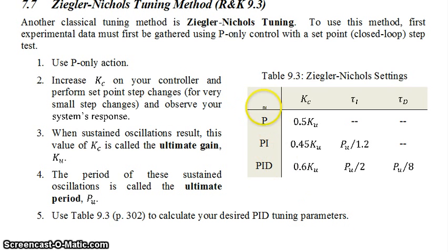For proportional only control, this method recommends that you use a controller gain as one half of your ultimate gain. If you have PI control, it recommends that you use your proportional gain as 45% of your ultimate gain, and then your tau i is going to be your ultimate period divided by 1.2. You can also read what you should do for PID control right off of the table.